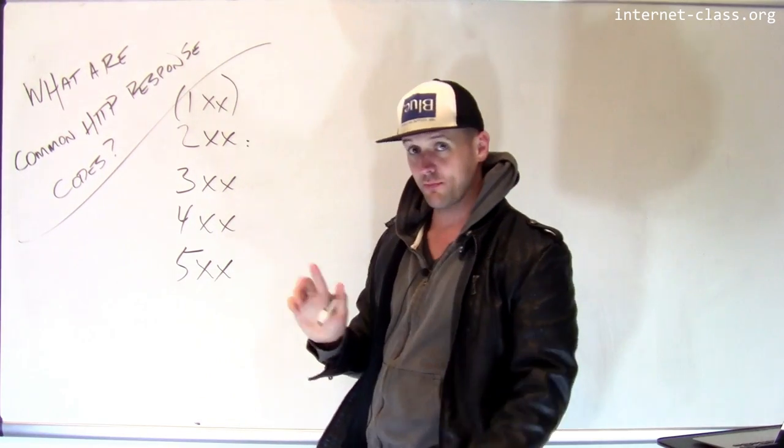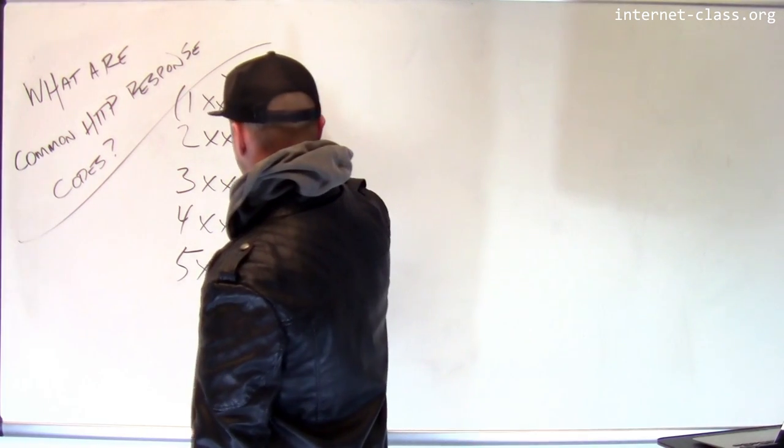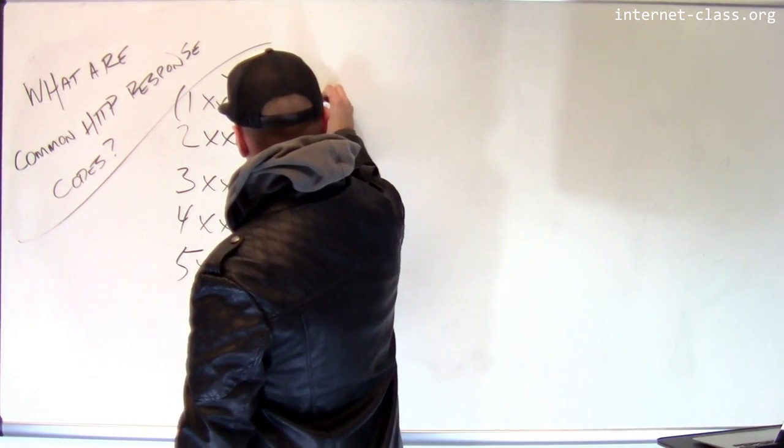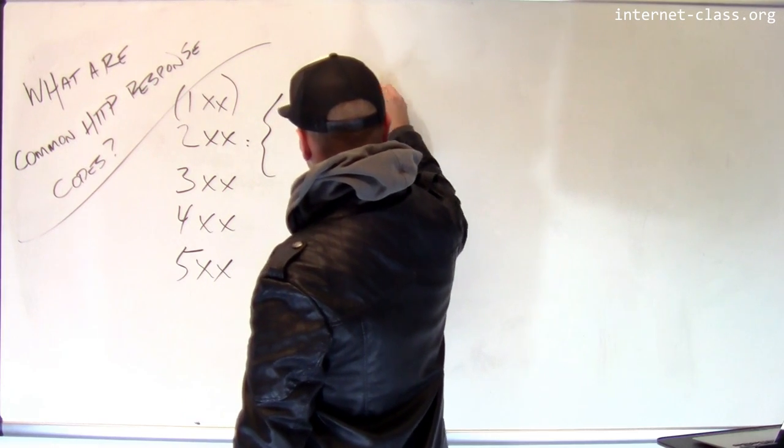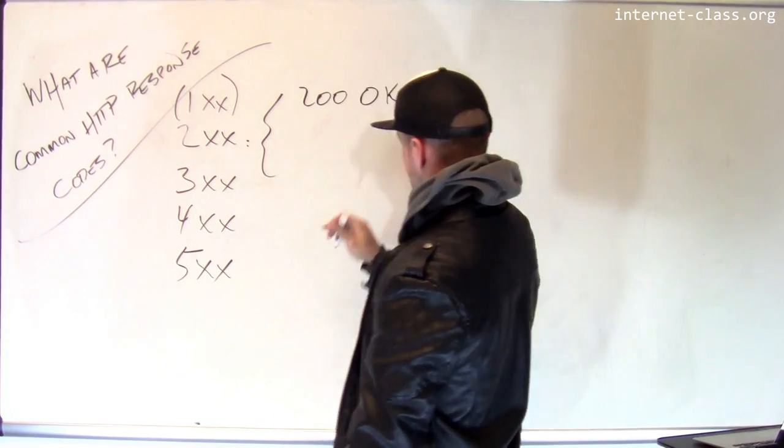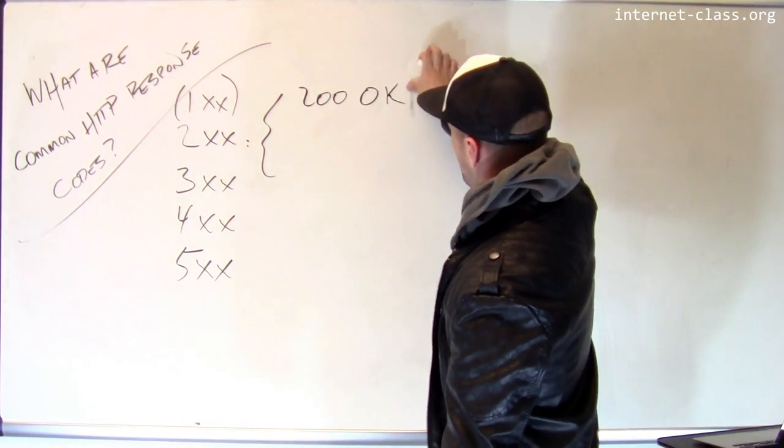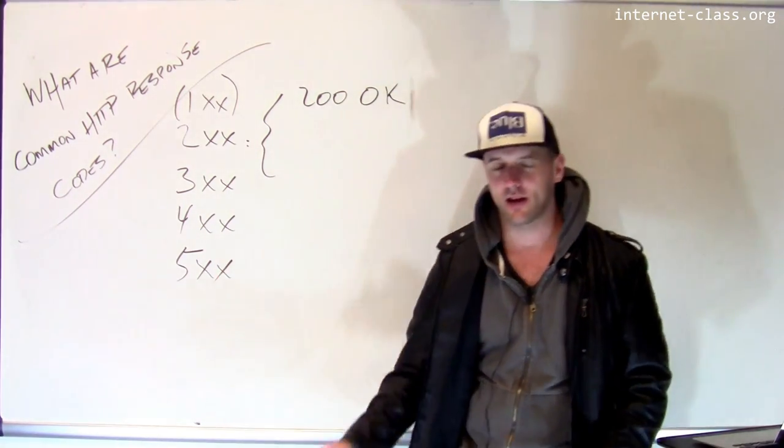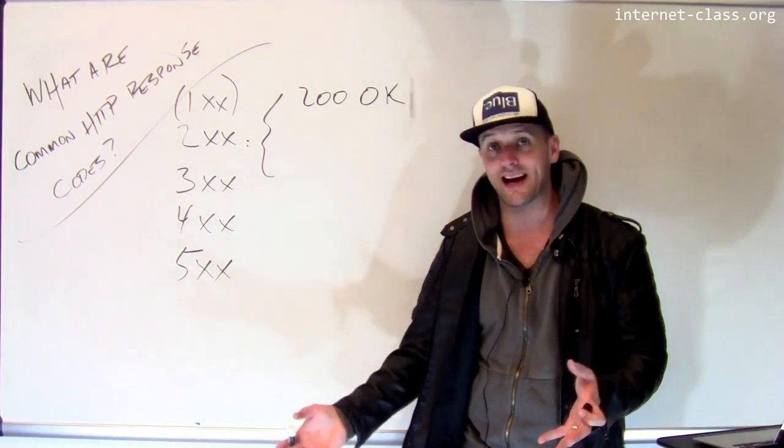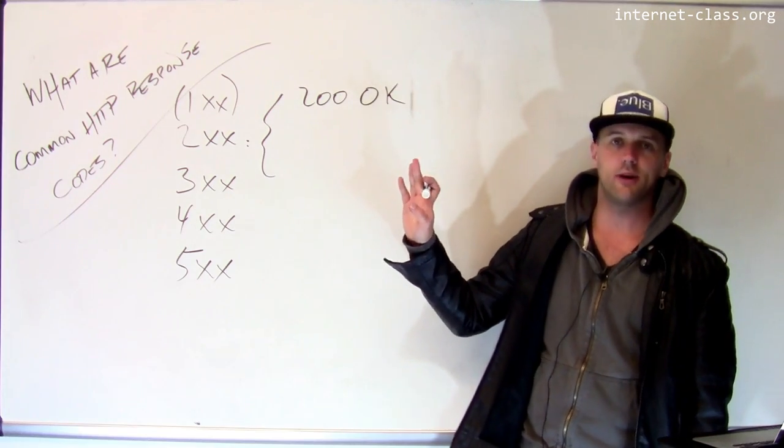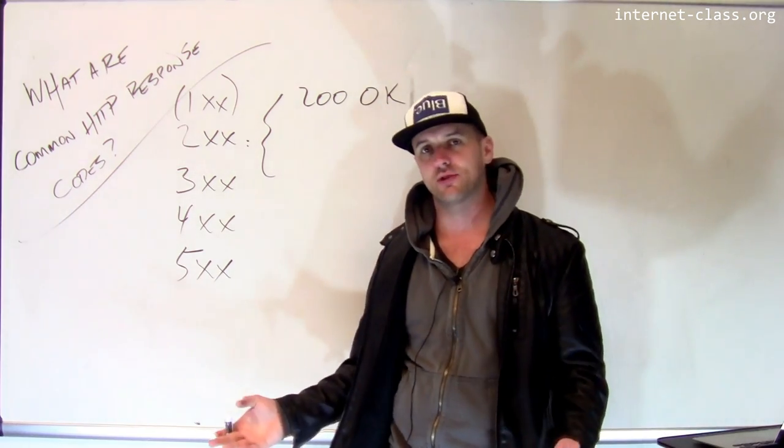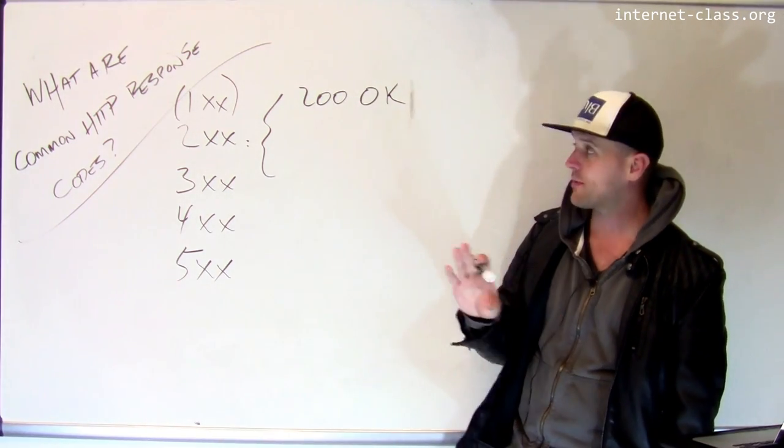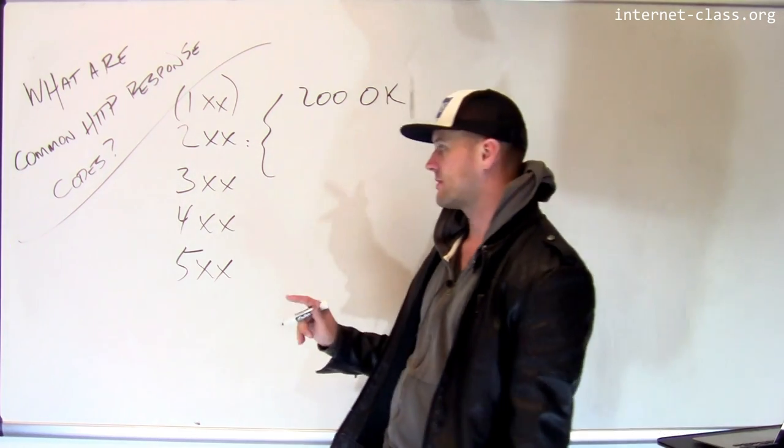By far the most common response, probably online, is a 200. It's not one that you see a lot because what a 200 means is that everything is okay. 200 means the request was satisfied. You send a GET request, the server sends you back the document with the status code of 200, meaning that I found the document and I returned it to you, everything is A-OK. So that's probably the most common 200 level response code.